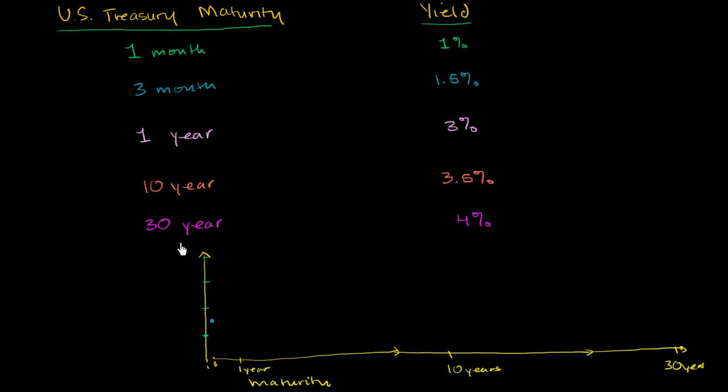On one year maturity, the yield is 3%. So you plot one year, this is 3% right over here. This is 1.5% right over there. And the first one right over there is 1%.